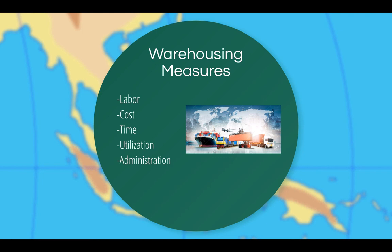Performance measures in warehousing are used to identify design and operations options that provide benefits in terms of increased speed or reduced costs. The primary warehousing measures include labor, cost, time, utilization, and administration. As with transportation, the diversity of warehouse types, sizes, and products carried will complicate performance measurement. Some common macro-level measurements focused on warehousing include return on investment, warehouse order processing costs, and warehouse labor productivity.